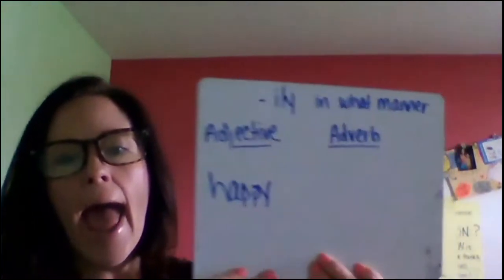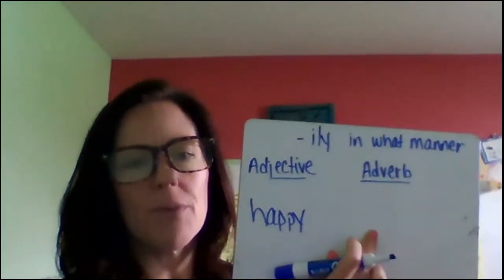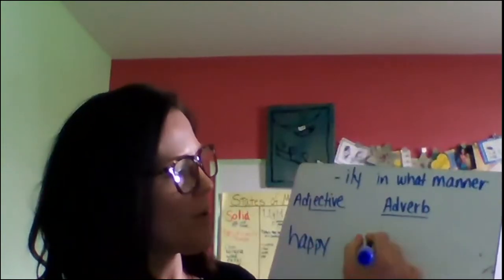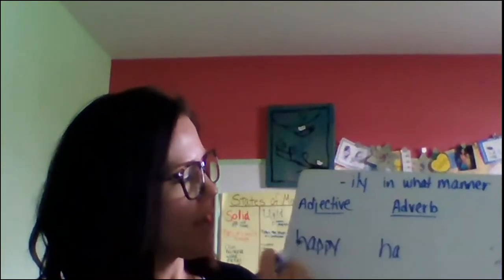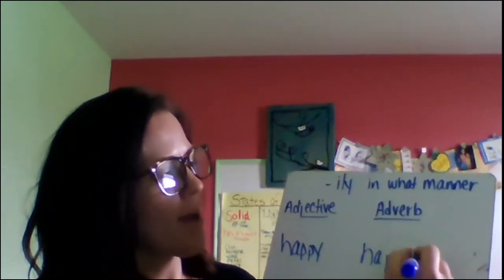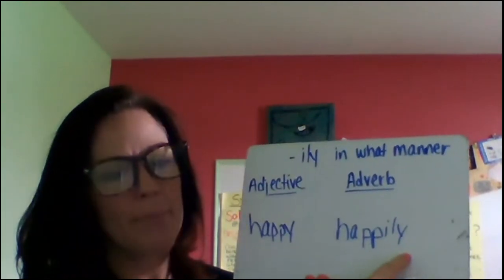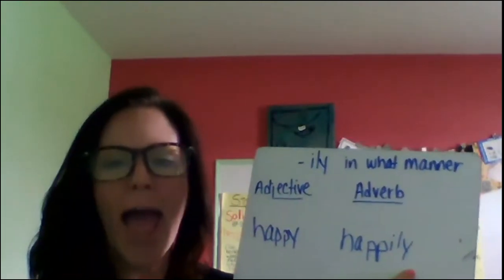Do the next one with me. The adjective is happy. Happy. To make it an adverb, I'm going to add I-L-Y. What do I do? Drop the Y, you got it. And I add I-L-Y.